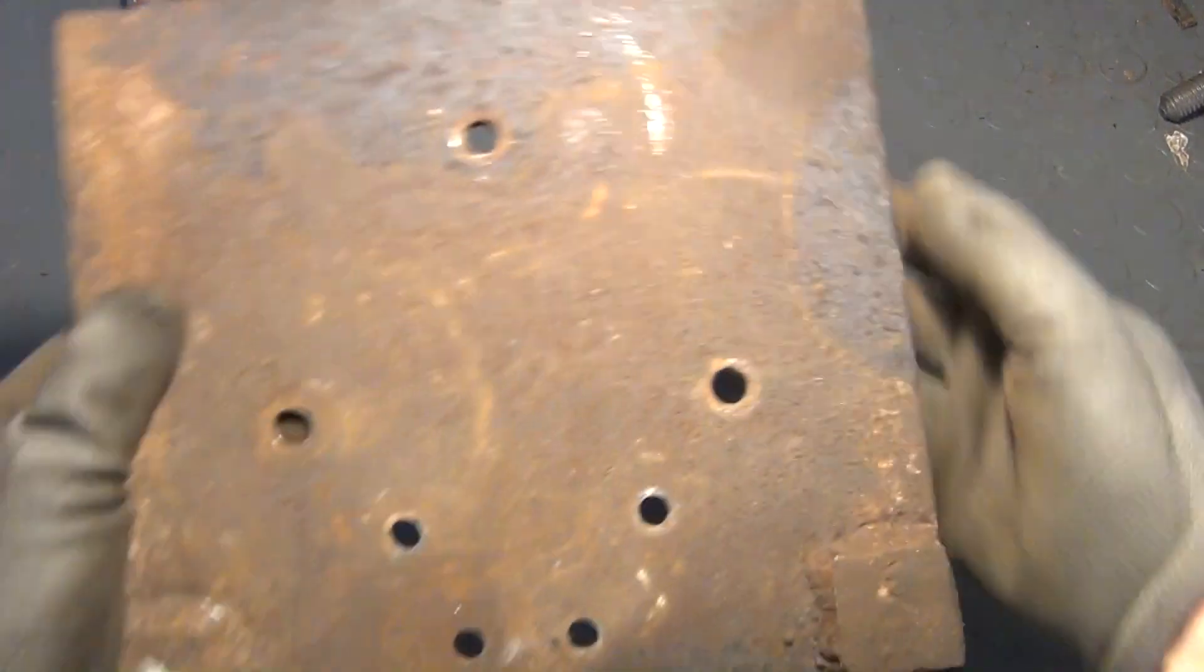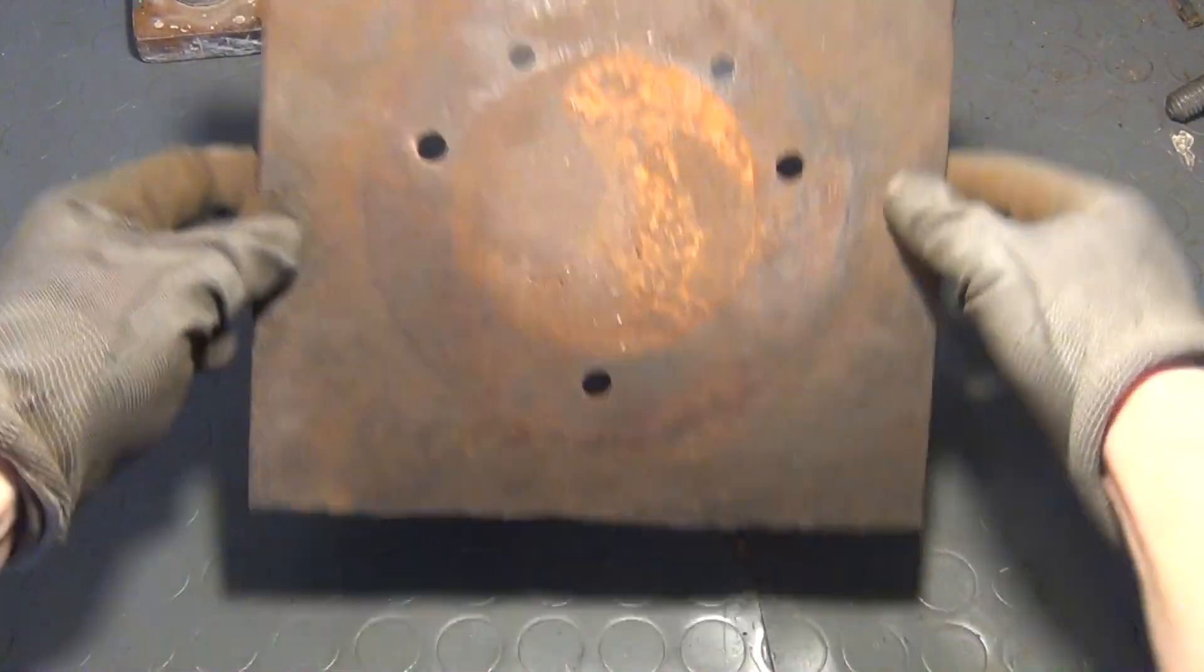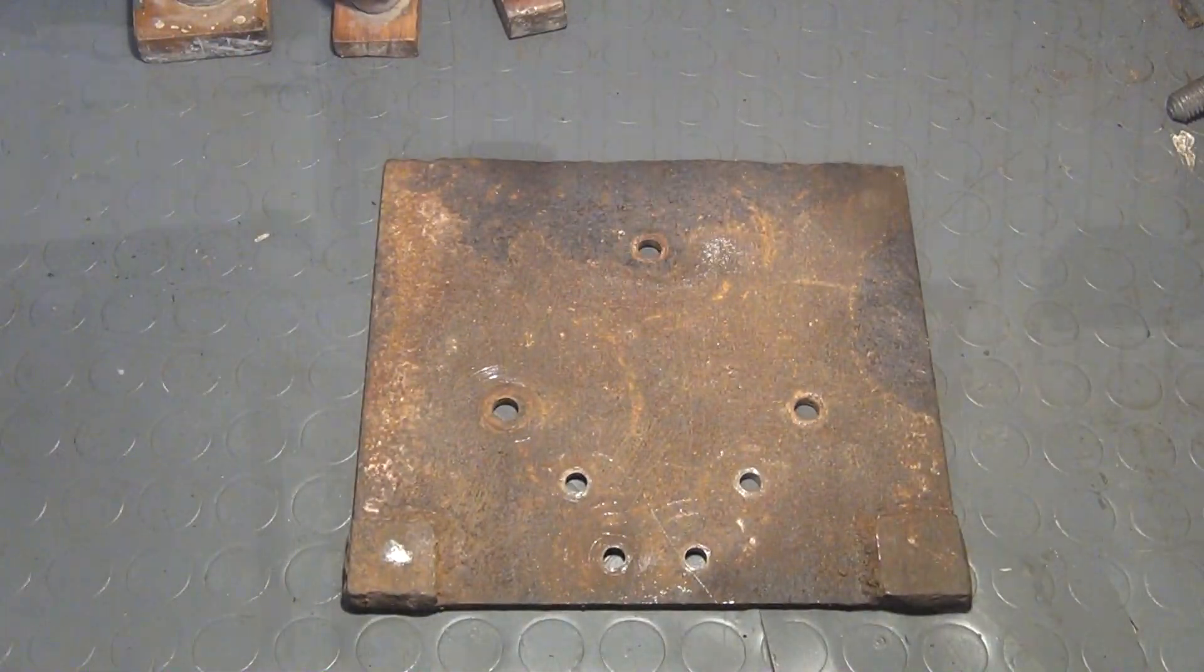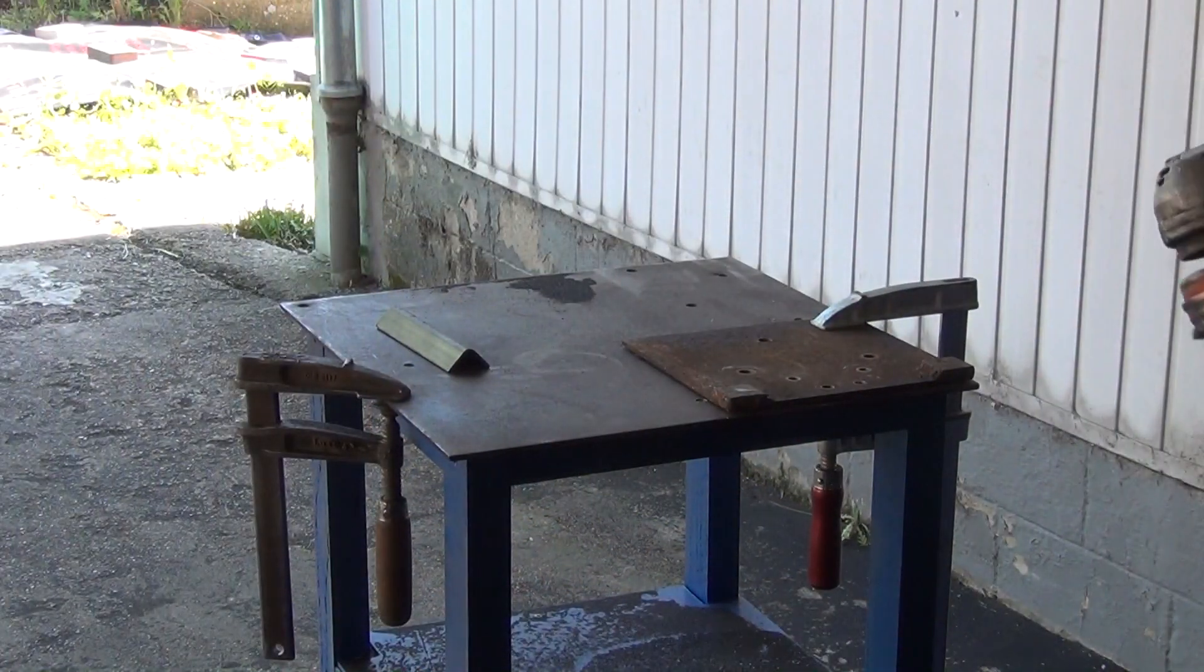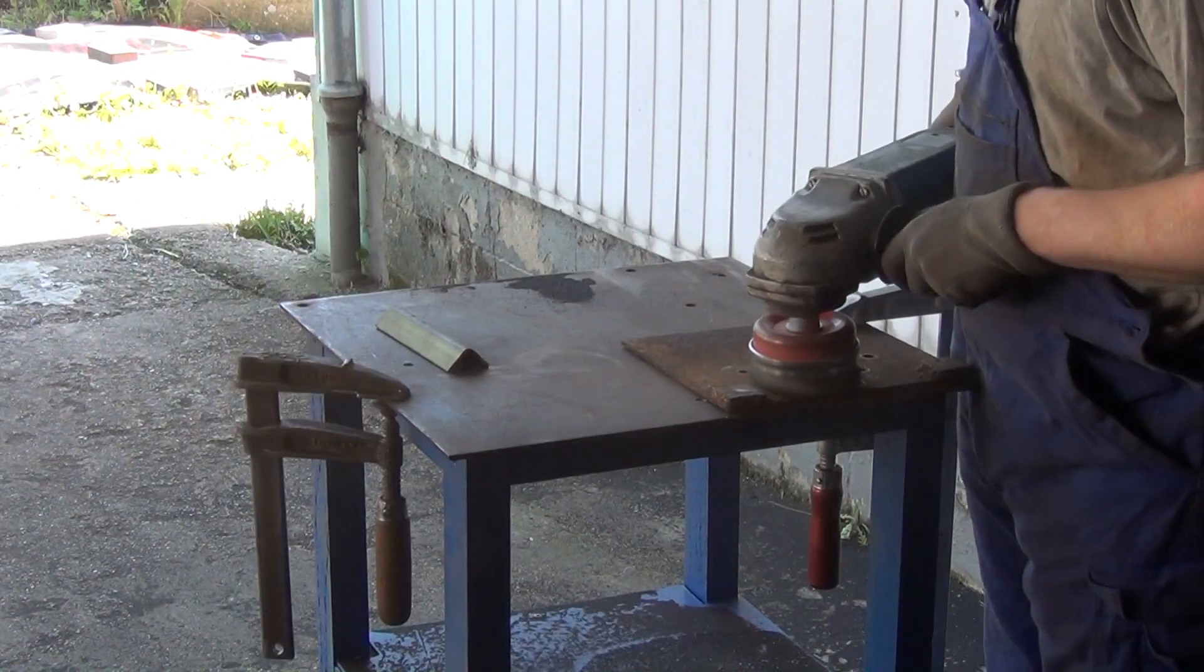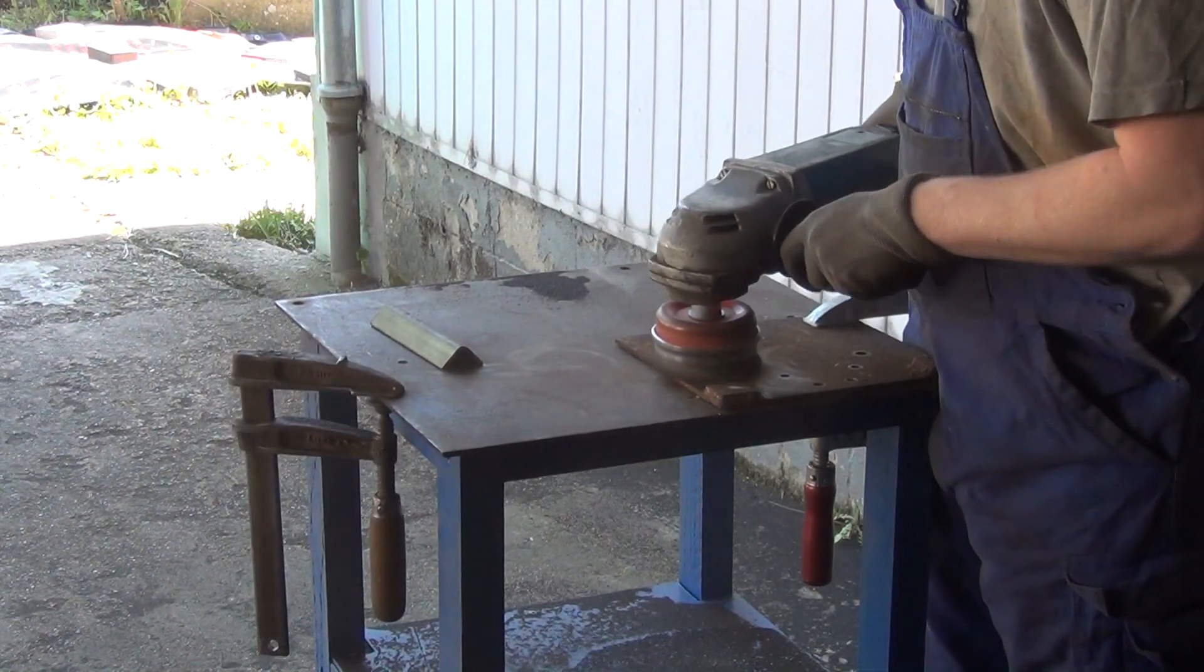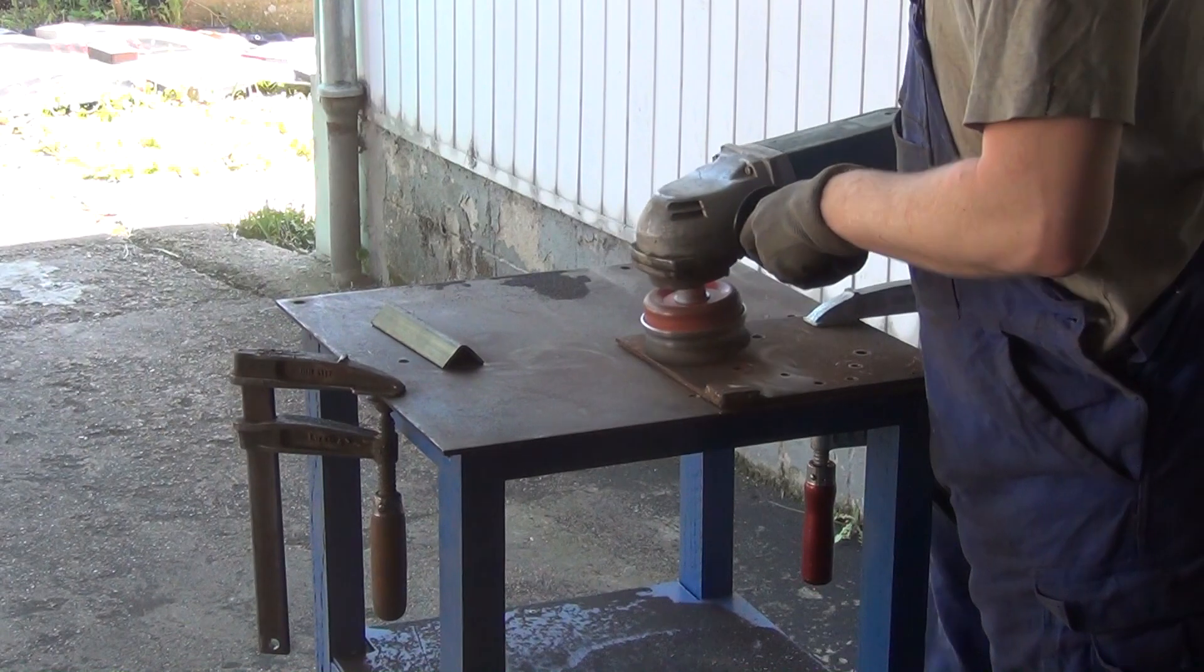Let's start with the electrolysis experiment. The first thing that I need is a sacrificial anode. For this, we can just use an old steel plate like this one. Now this is pretty rusty and that wouldn't be a problem since this thing is going to rust even more when the experiment is done.